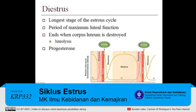Diestrus is the longest stage of the estrus cycle. This is the time when the corpus luteum is secreting sustained levels of progesterone. Diestrus ends when the corpus luteum regresses. Again, the dominant hormone being secreted during diestrus is progesterone.